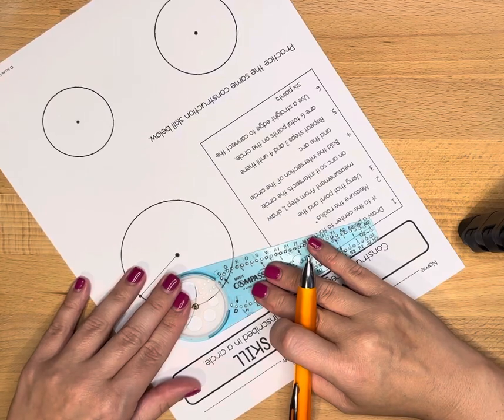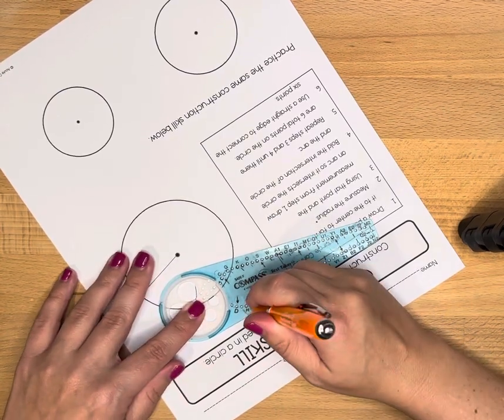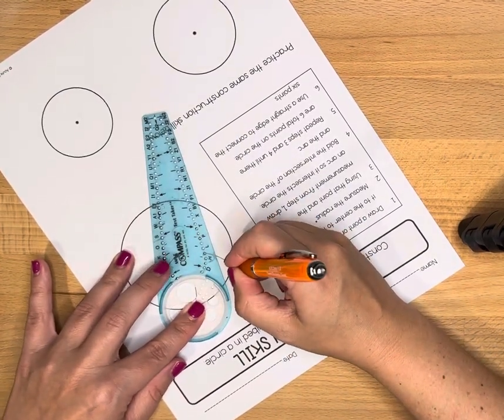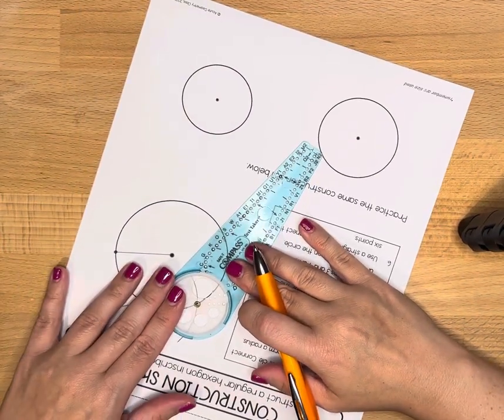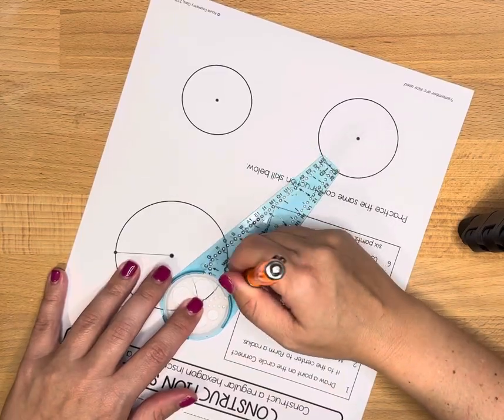Okay, so I'm going to put my gold piece on that new point, draw an arc using the same measurement, and get a point. And I'm going to repeat this, again just kind of rotating my paper around as I do it.